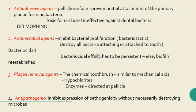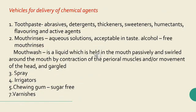Now let us know the vehicles for delivery of chemical plaque control agents. First and foremost would be toothpaste. The important components of toothpaste — a common viva question — include abrasives, detergents, thickeners, sweeteners, humectants, flavoring, and the active agents. The second vehicle would be mouth rinses, which are aqueous solutions acceptable in taste. Because of the risk of cancers, most mouth rinses are now alcohol-free. A mouthwash is a liquid held in the mouth passively and swirled around by contraction of the perioral muscles and/or movement of the head.